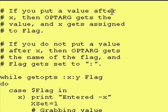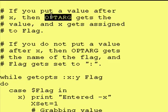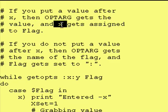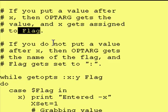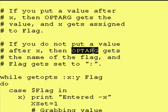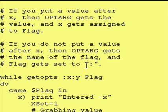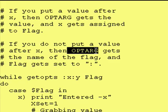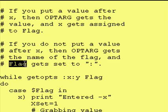Now, if you put a value after the "-x", then our variable OPTARG gets the value that you put after the "-x" on the command line, and our flag "-x" gets assigned to our variable flag. If you forget to put a value after the "-x", then OPTARG instead gets the letter "x", and our variable flag gets a colon. If you enter an invalid flag, the invalid flag name gets assigned to OPTARG and a question mark gets assigned to flag.